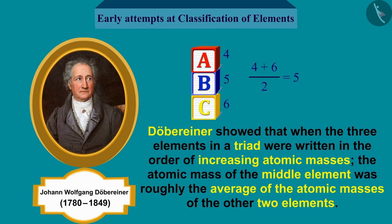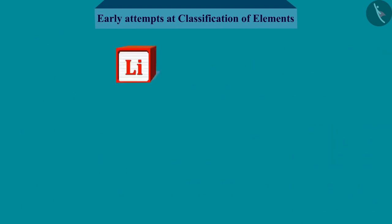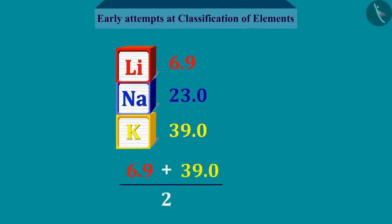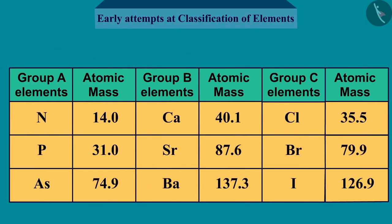For example, take the triad consisting of Lithium (Li), Sodium (Na), and Potassium (K), with respective atomic masses 6.9, 23.0, and 39.0. The average atomic mass of Lithium and Potassium is approximately equal to the atomic mass of Sodium. You will find that groups B and C also form Döbereiner triads.